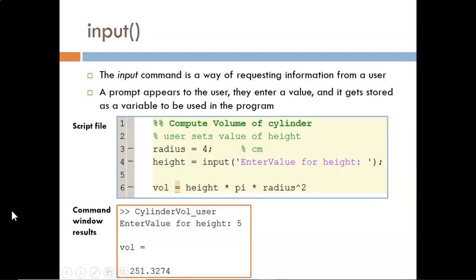The final slide in this quick overview highlights the input function. This is how we can use the code to request information from the user through a prompt. A simple example is shown here, used for computing the volume of a cylinder. In the script, the radius is fixed at 4 centimeters. The height value, however, will be determined by the user. When the script is run, this prompt appears in the command window that was included within the input function. The script will wait until the user types in a number and presses enter. That number gets stored under the variable named height.